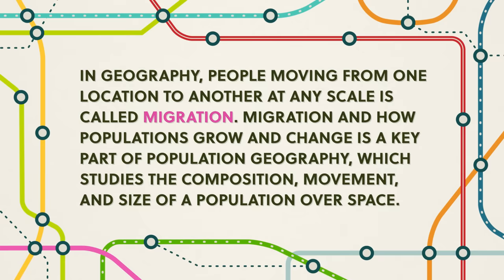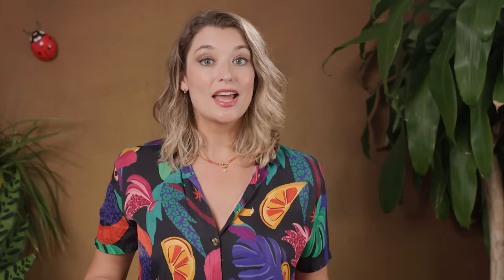After asking 'why is this here and not there' in geography, our next big question is 'how did this get here?' From air pressure to Malaysian architecture to potatoes and bananas, geographers study the movement of just about anything on the planet. In geography, people moving from one location to another at any scale is called migration. Migration and how populations grow and change is a key part of population geography, which studies the composition, movement, and size of a population over space. Much like ideas and innovations diffuse, people move too. So for the next two episodes we're going to examine how populations move and change, and some of the consequences of those movements.